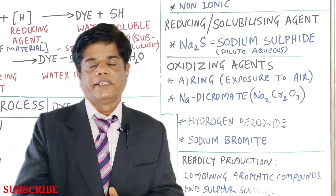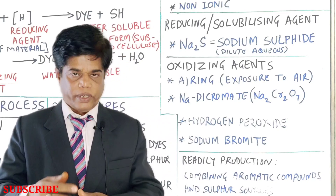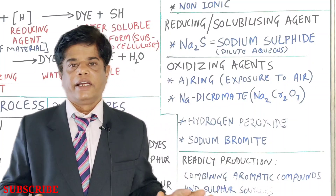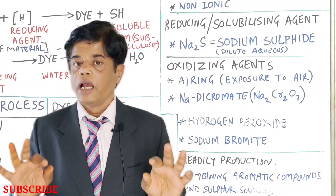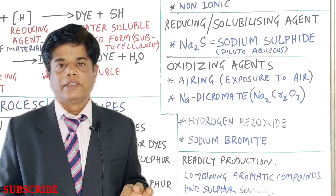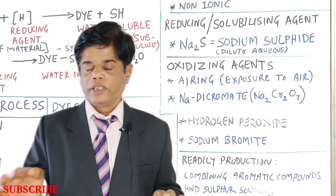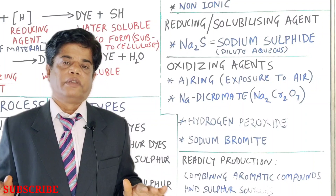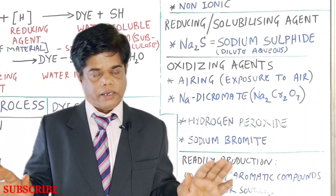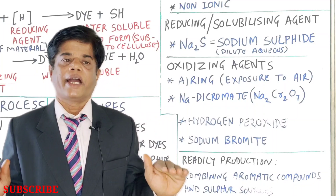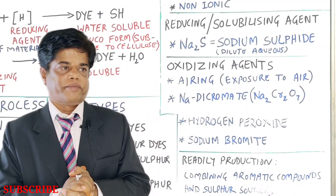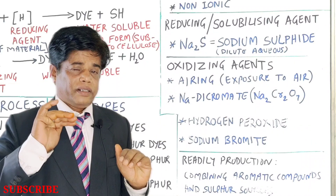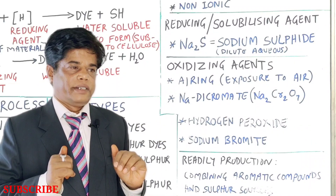After oxidizing, the fabric goes through washing, soaping, and further washing. This is how sulfur dyeing works on textile materials, especially cotton and viscose, as well as blended fabrics like polyester-cotton or nylon-cotton blends. Yarns are also dyed this way. This is the mechanism of the dye.